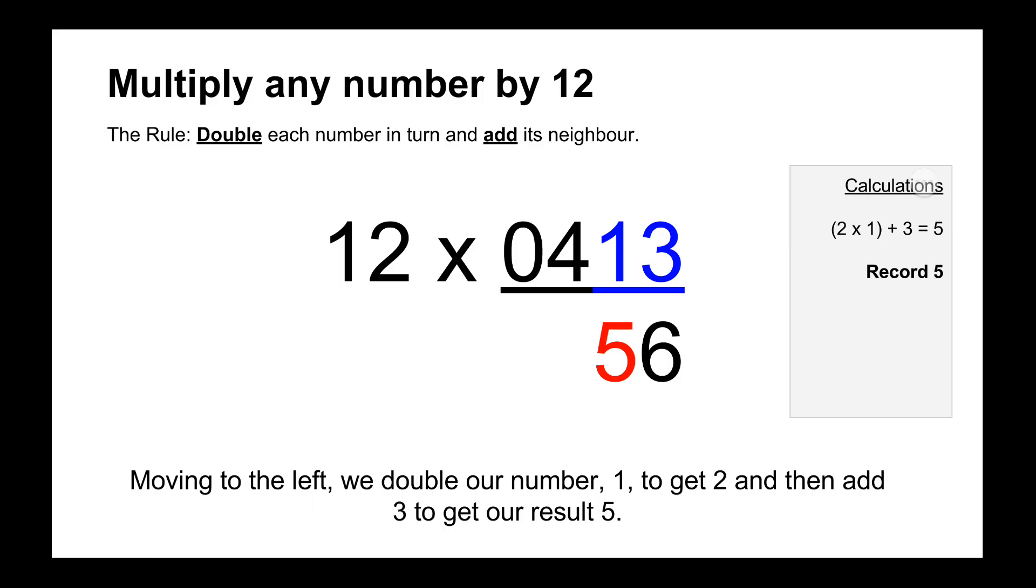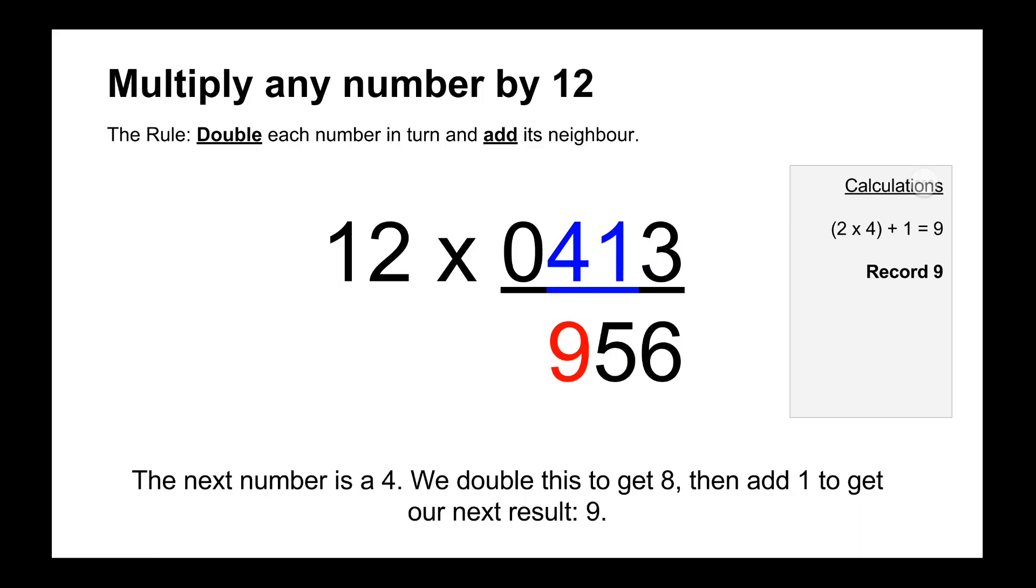Now we jump across to digit number 1 and we double that to get 2 and then we add its right hand neighbour which is 3 to get 5. And then across to the left again we do 4 times 2 or 4 doubled is 8 plus its neighbour which is 1 equals 9. So we record the 9.